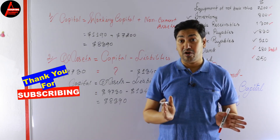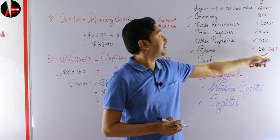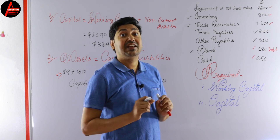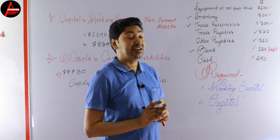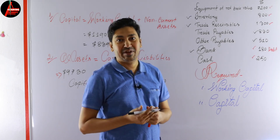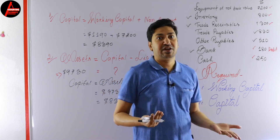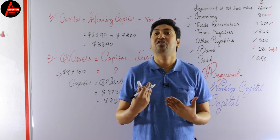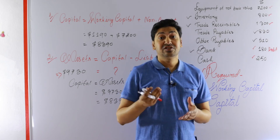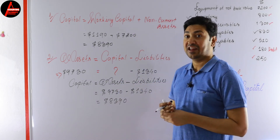One important tip: if you see the bank balance is written as 'debit,' it means it is a current asset. If it is written as 'credit,' then it is a current liability — meaning a bank overdraft. If nothing is written, you consider the amount as a current asset. Please remember these tips and tricks when calculating capital.